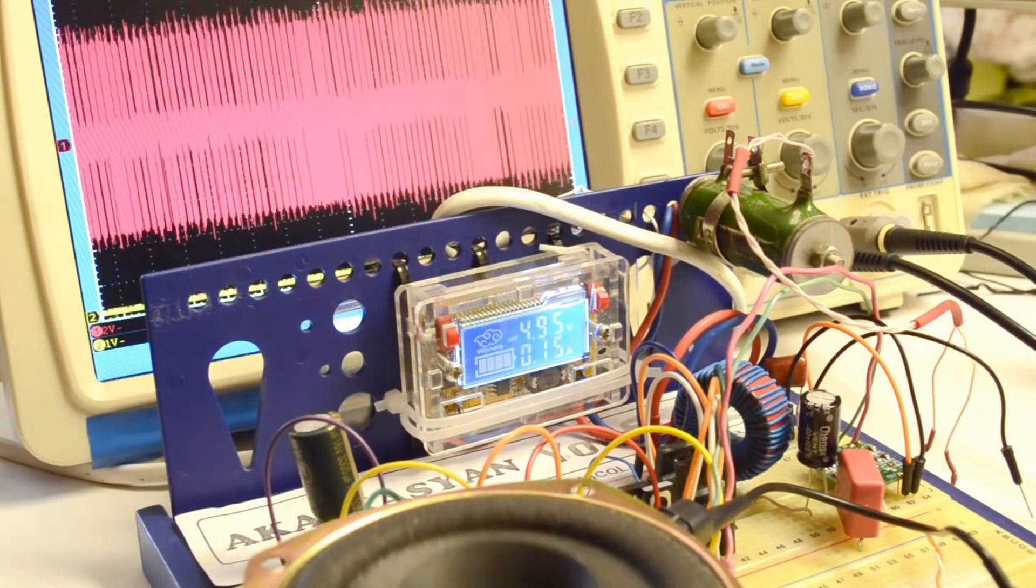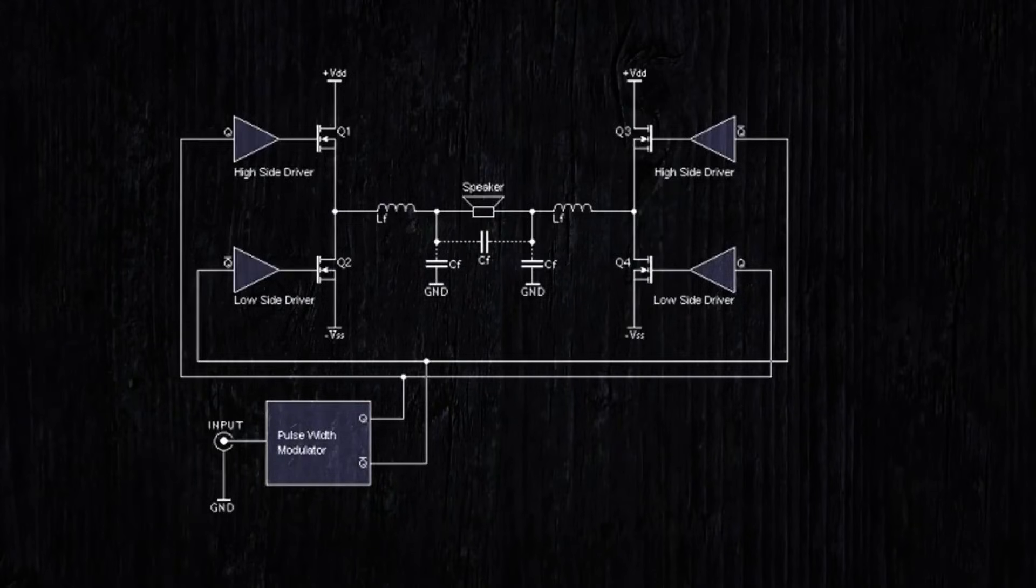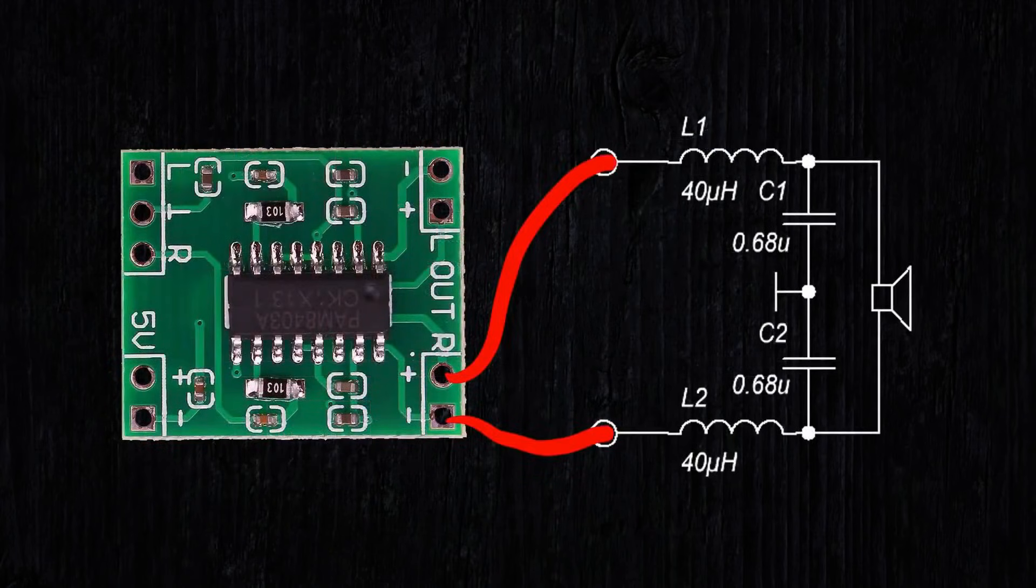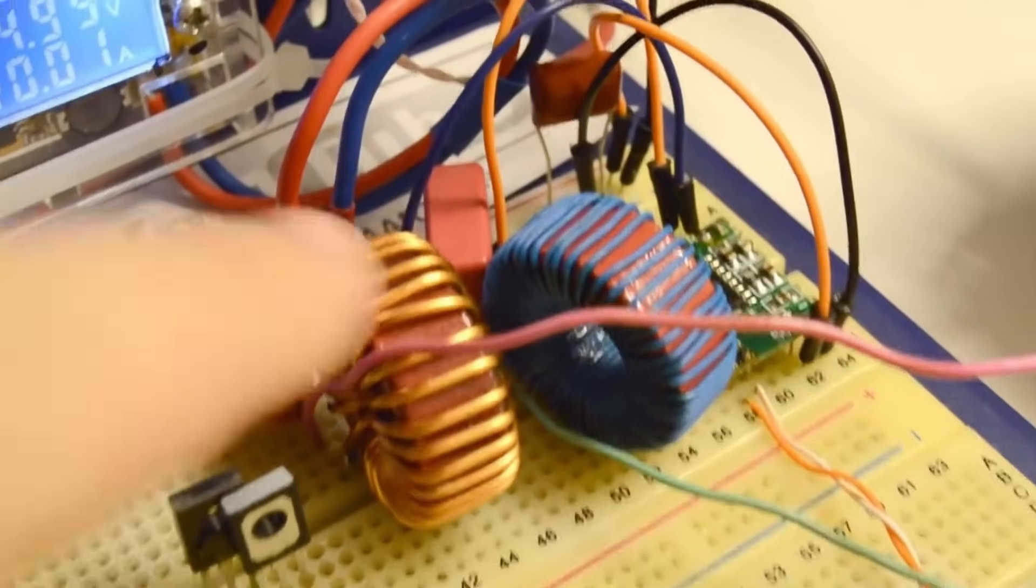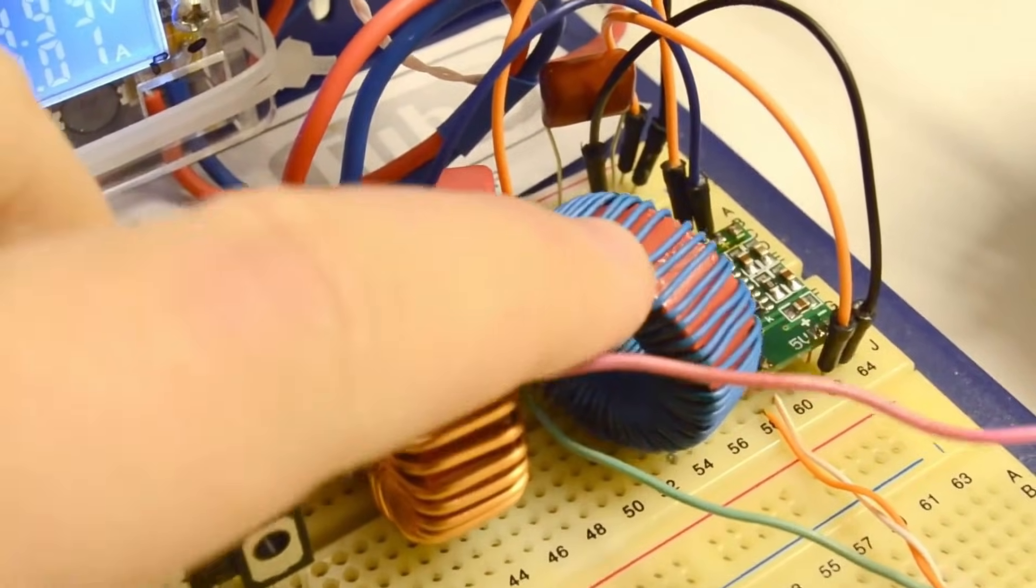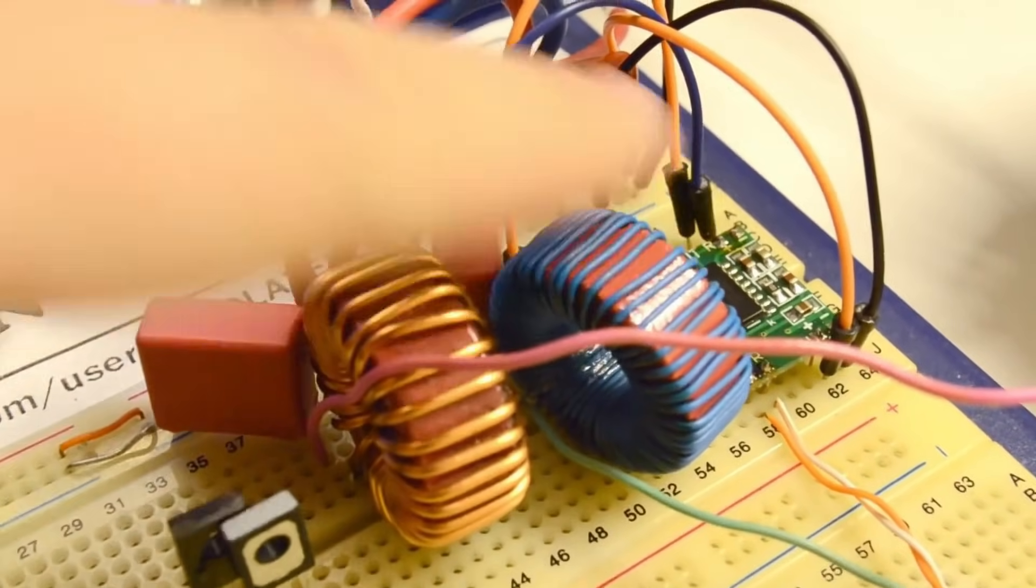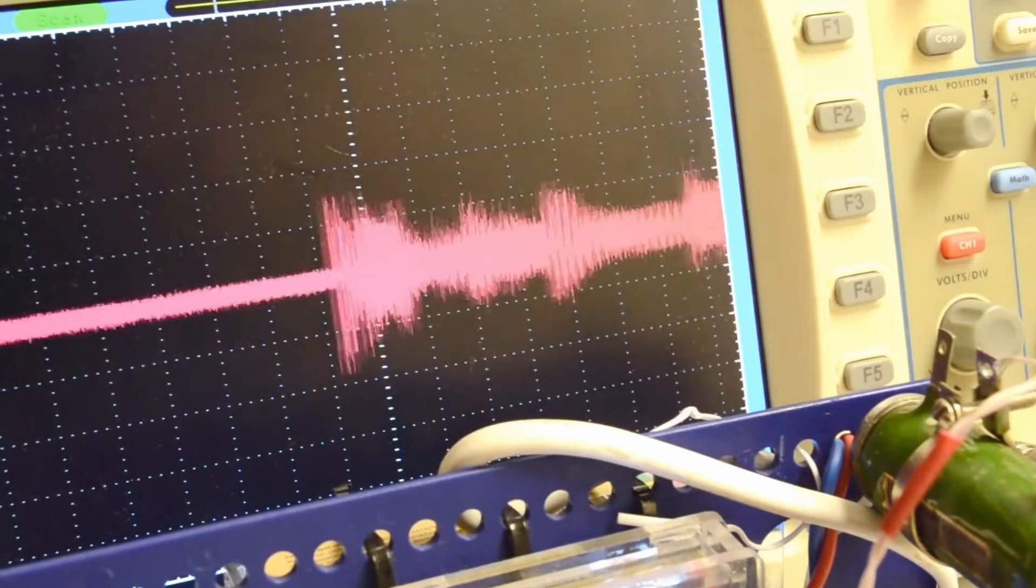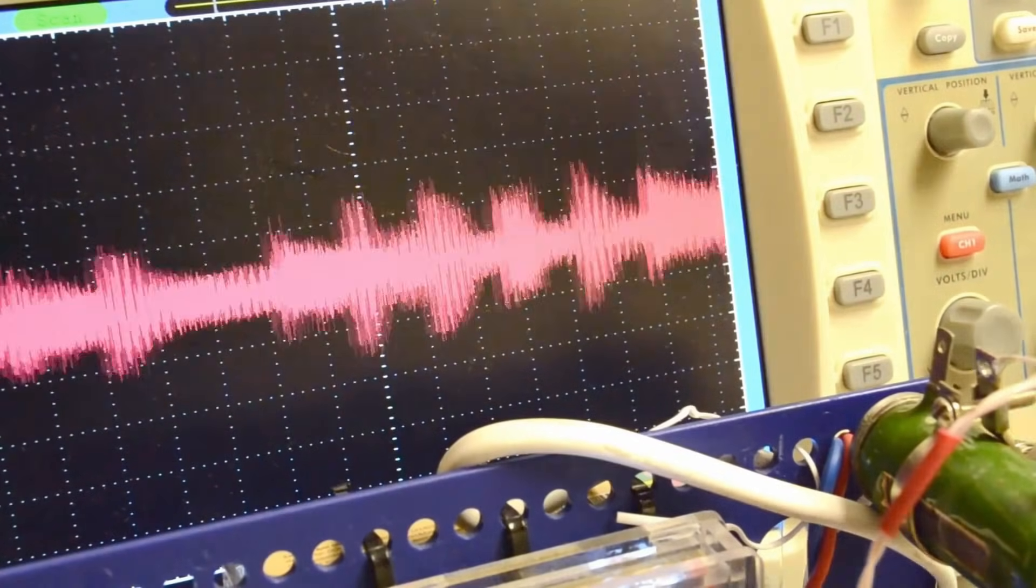The chip's output is implemented in a bridge configuration. To reduce the size of the board, the Chinese did not install an output filter. For the bridge configuration, it will be as follows. I used different inductors for demonstration because I simply didn't have identical ones on hand. And the following signal is obtained at the output. You can see that the high-frequency pulses have disappeared.